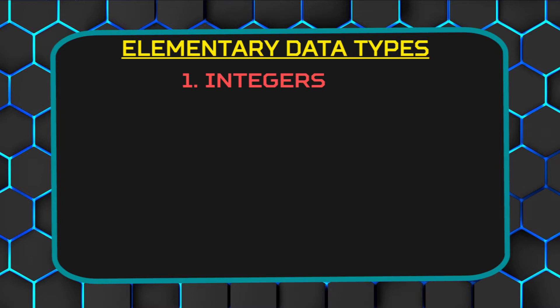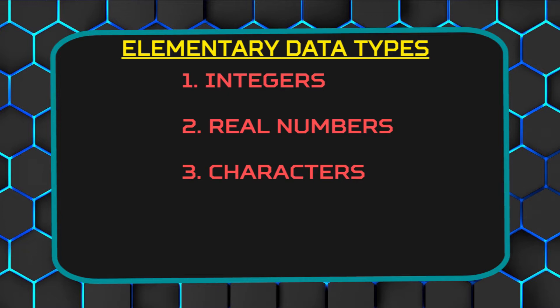Number 1, we have integers. Number 2, real numbers. Number 3, characters. Number 4, strings. And number 5, boolean.